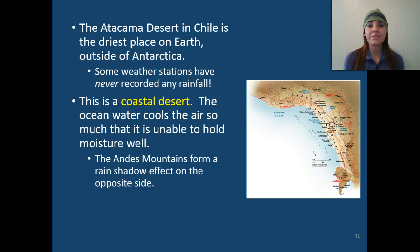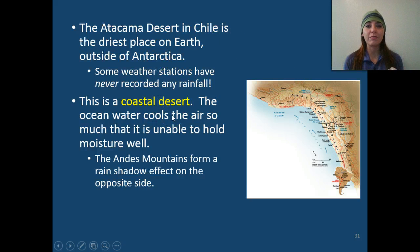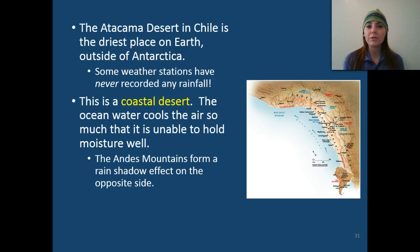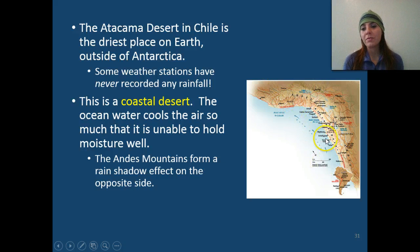The Atacama Desert in Chile is the driest place on Earth outside of Antarctica, which is considered the largest and driest desert on Earth. Some weather stations at the Atacama Desert have never recorded rainfall ever. This is a coastal desert where ocean water cools the air so it's unable to hold moisture at all. The Andes Mountains form a rain shadow effect on the opposite side — here are the Andes Mountains, and this is the Atacama Desert.